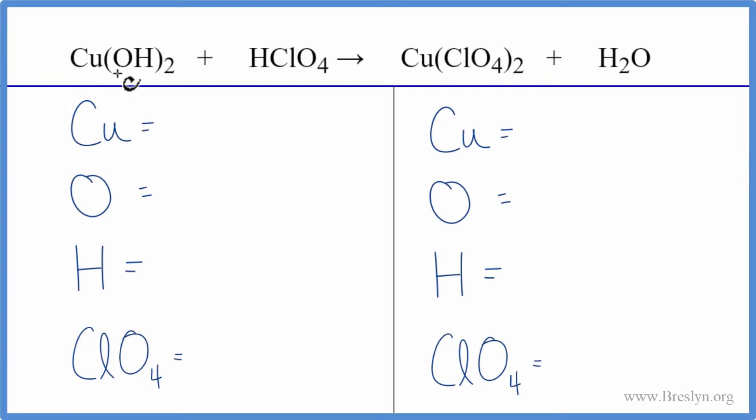To balance this equation we have copper hydroxide and perchloric acid, so it's a neutralization reaction. We're going to do a trick to make this easier to balance. We have this perchlorate ion ClO4, we have it here and here, so we're going to count it as just one item. That'll make it easier to balance; we won't have to keep track of all these oxygens.